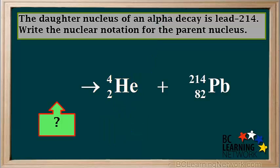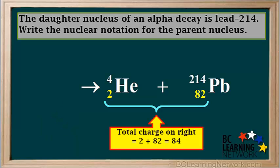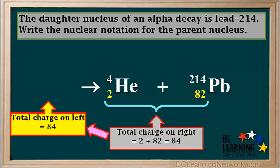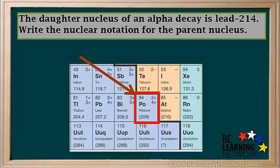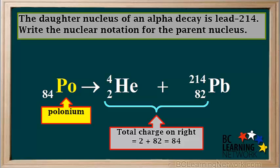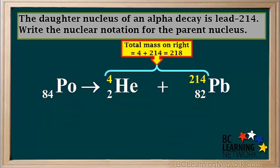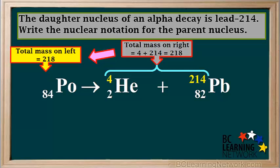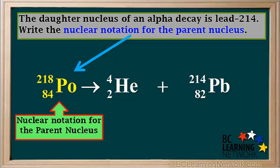To find the identity of the parent nucleus, we use conservation of charge and mass. In an alpha decay, there is only one reactant. The total charge on the right side is 2 plus 82, which equals 84. So the total charge on the left side is also 84. Element number 84 is polonium, Po. To find the mass, the total mass on the right side is 4 plus 214, which equals 218. So the total mass on the left side must also be 218. The nuclear notation for the parent nucleus is the symbol Po with 218 on the top left and 84 on the bottom left.